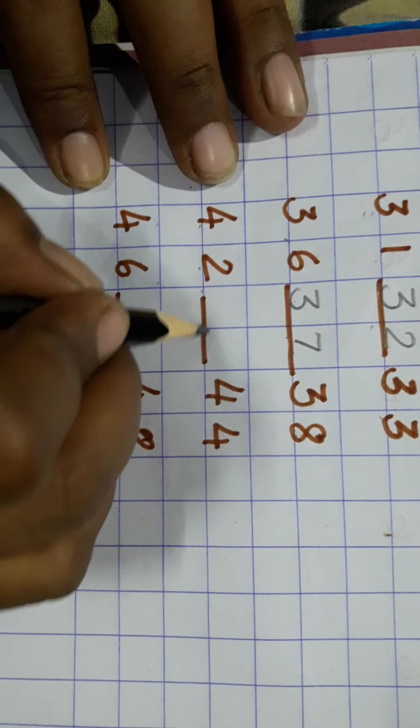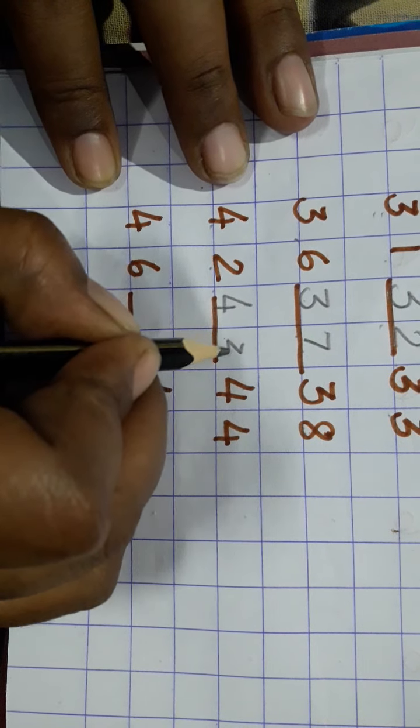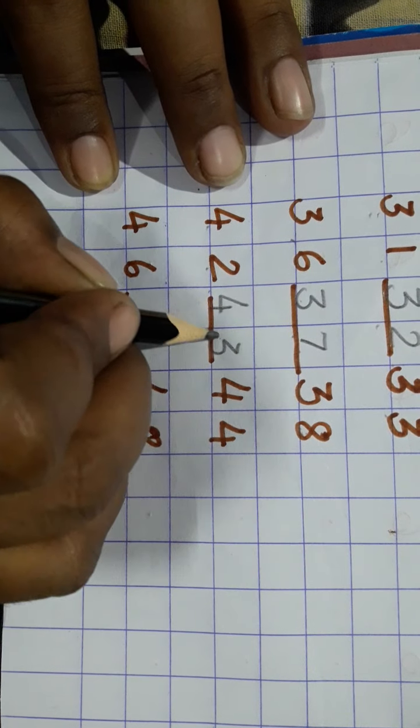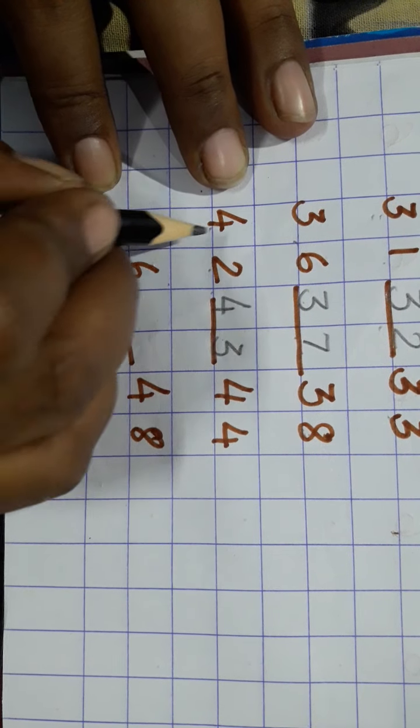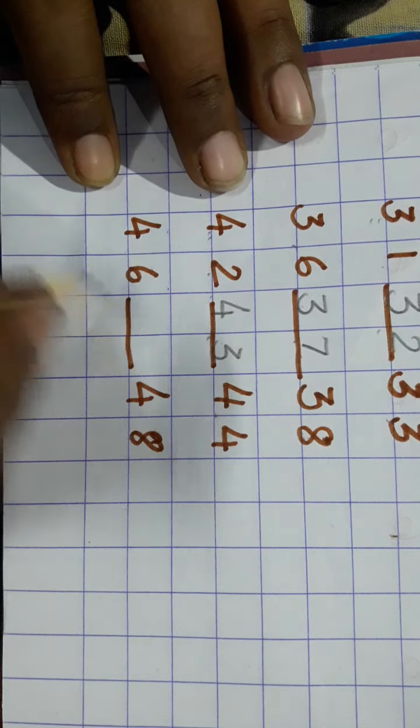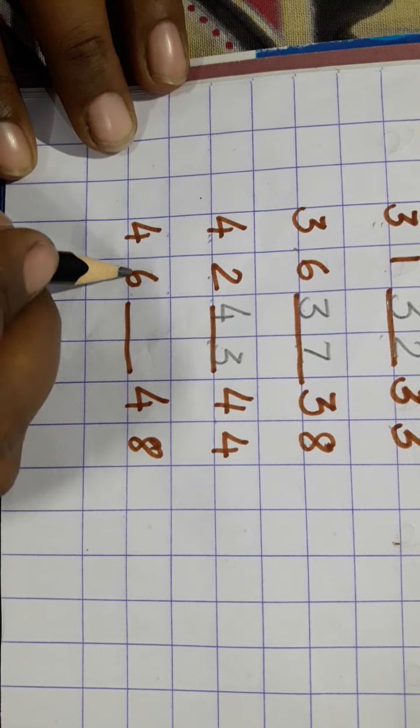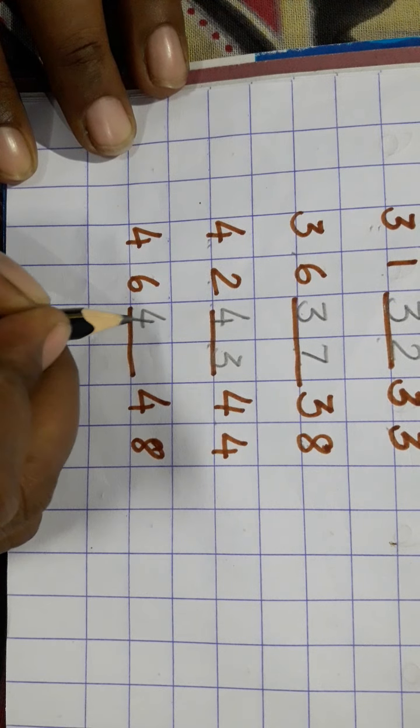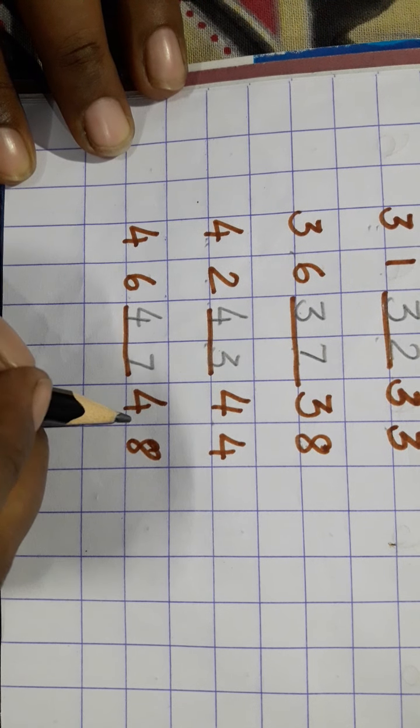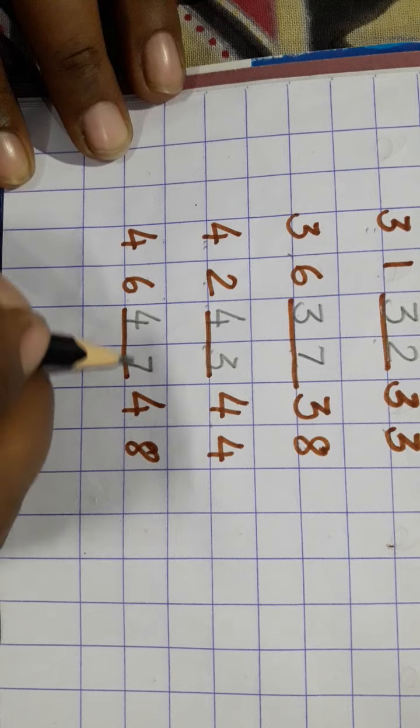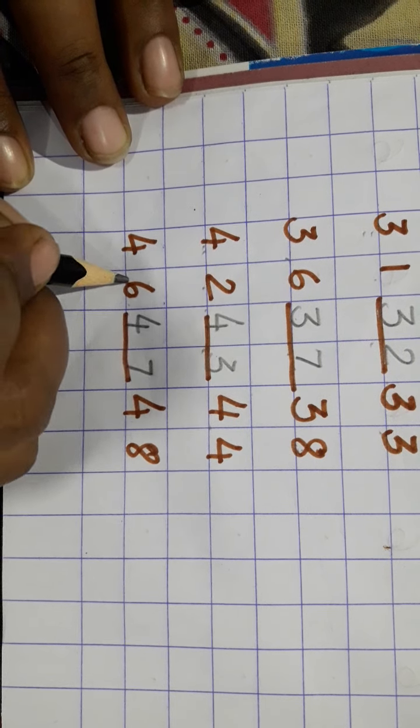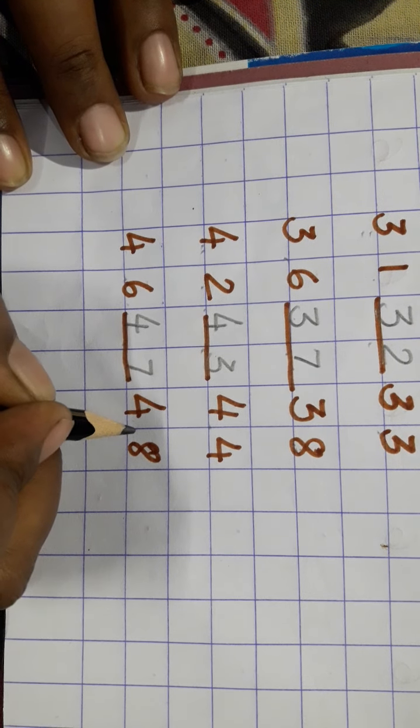What comes after 42? 43. What comes before 48? 47. 46. What comes before 48? 47. 46, 47, 48.